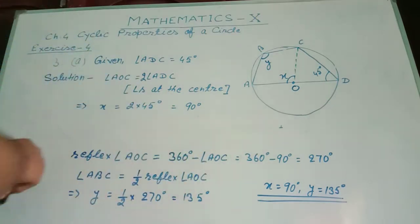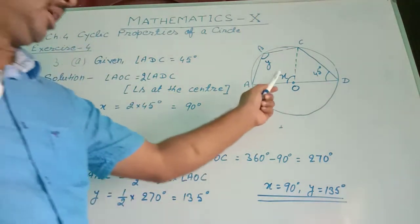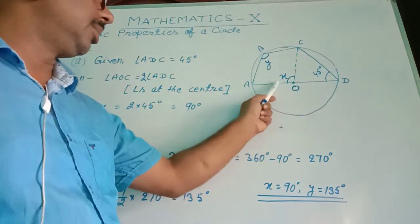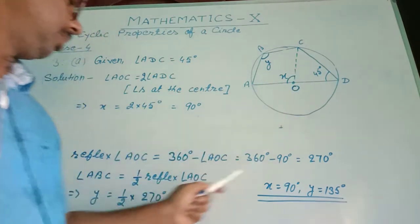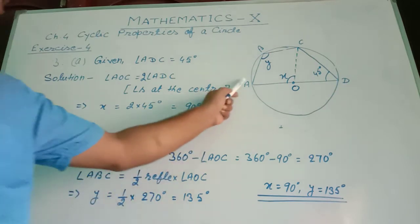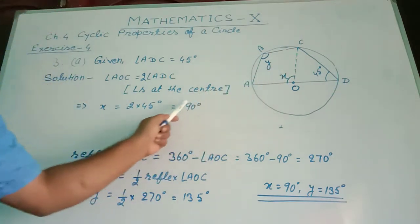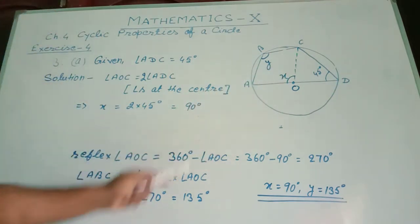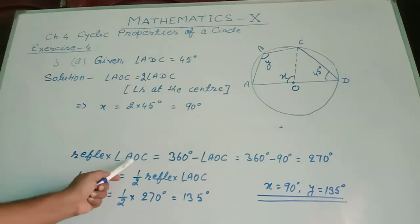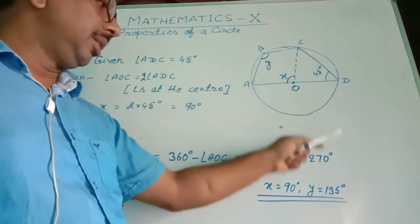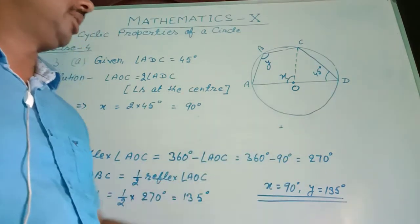Next, we find the reflex of angle AOC. The reflex of angle AOC equals 360 degrees minus angle AOC. Since AOC equals 90 degrees, the reflex of angle AOC equals 360 minus 90, which equals 270 degrees.